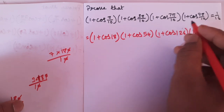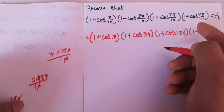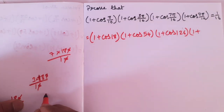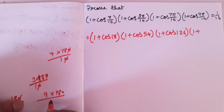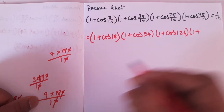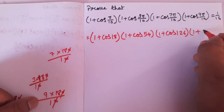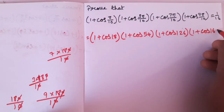Next, 1 plus cos(9pi/10). Pi and 180 by 10 — cancel. 9 into 18. E0, E0. Cos 162.